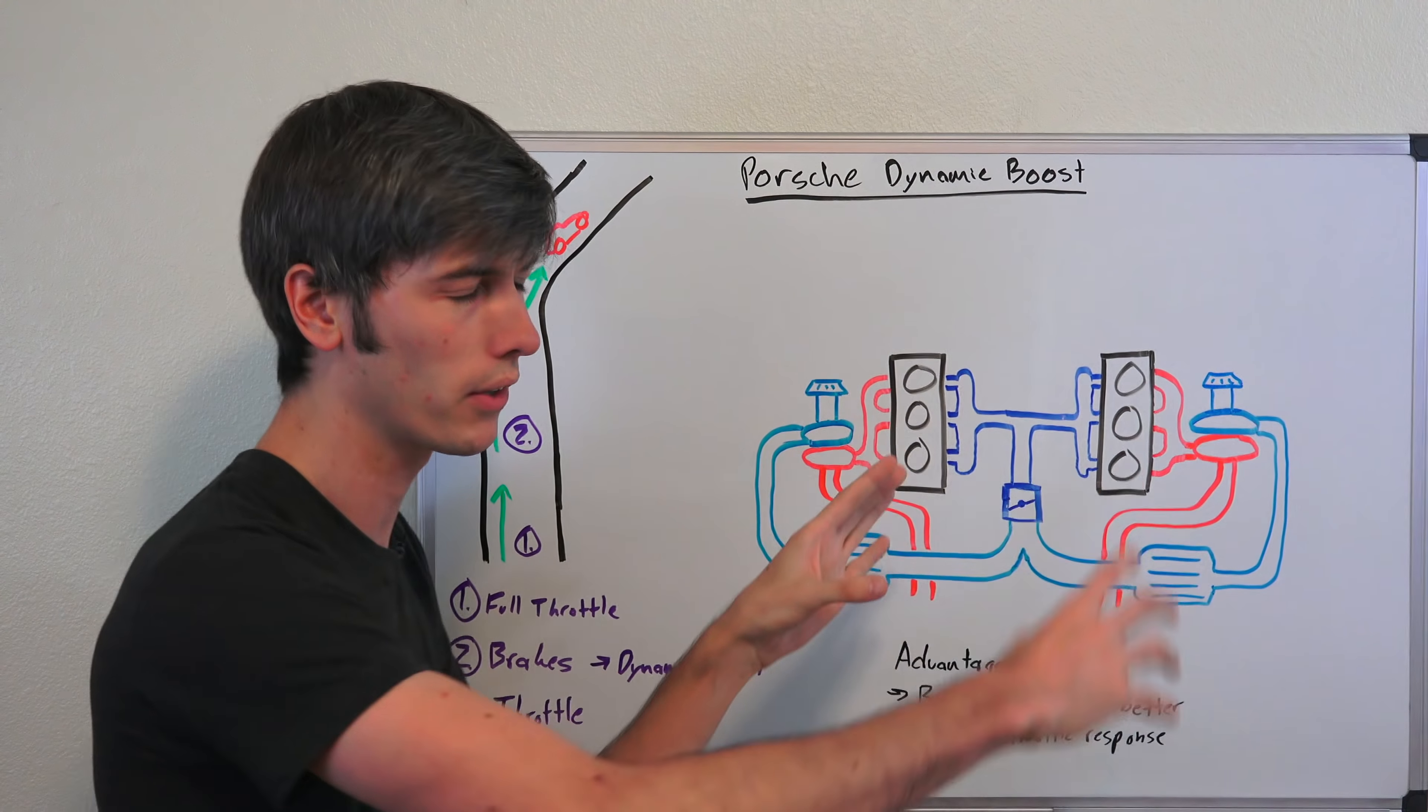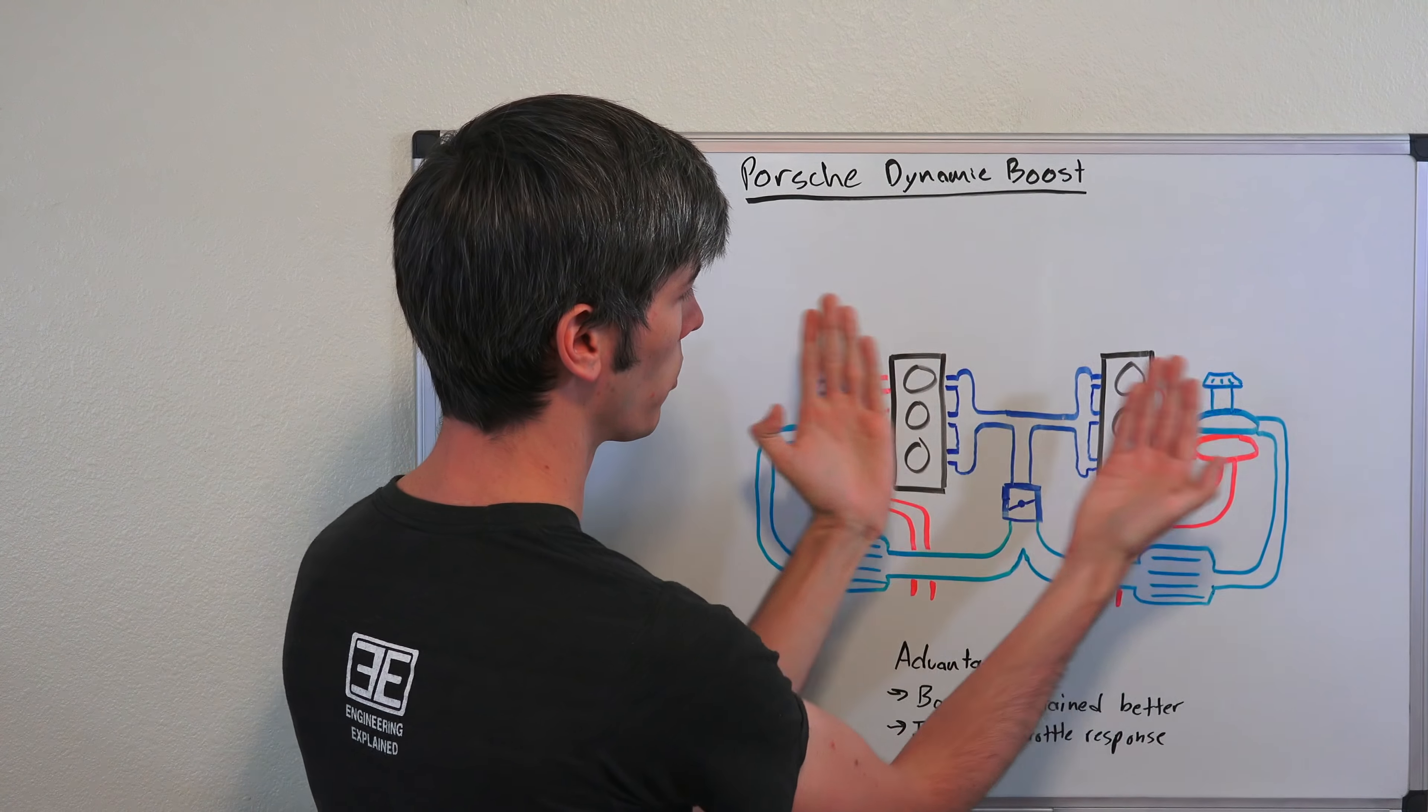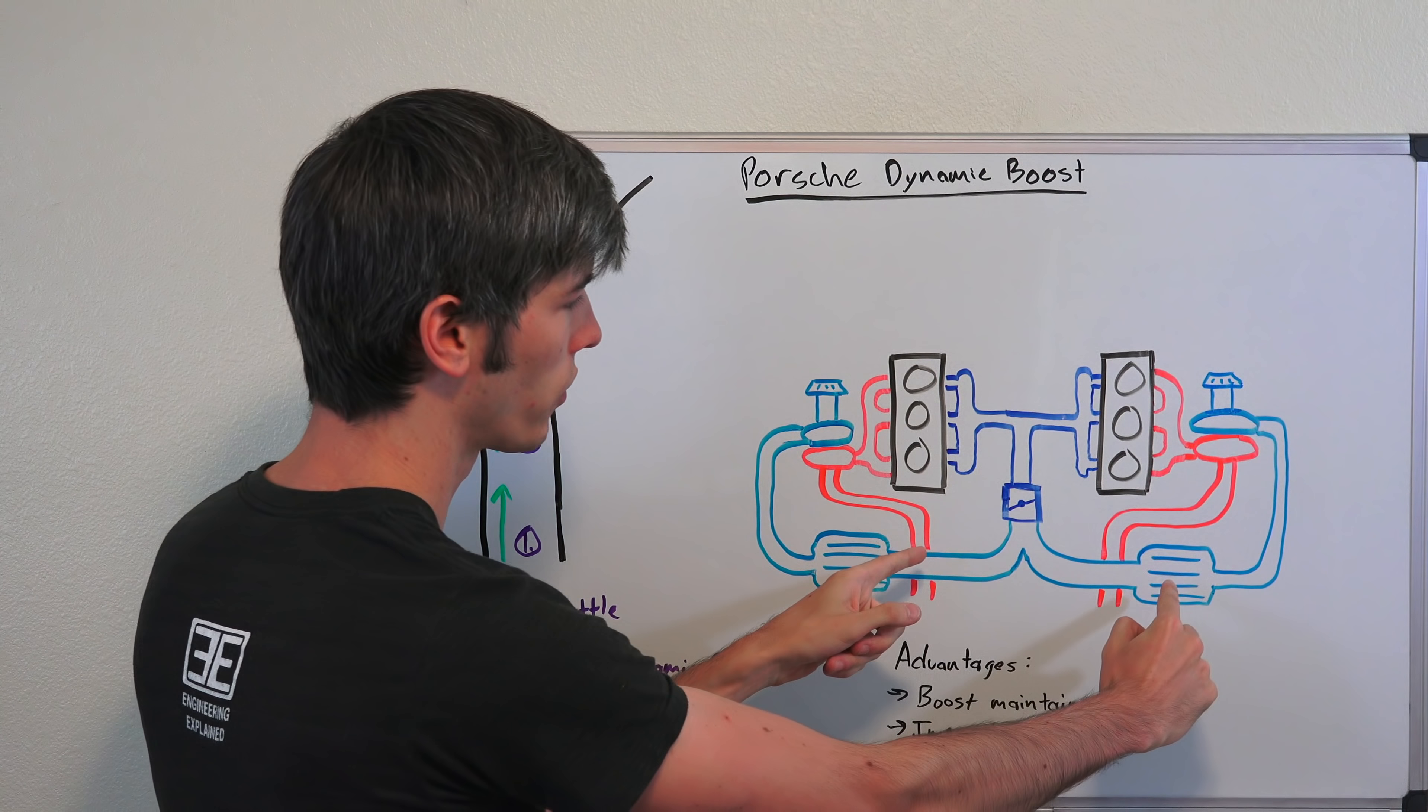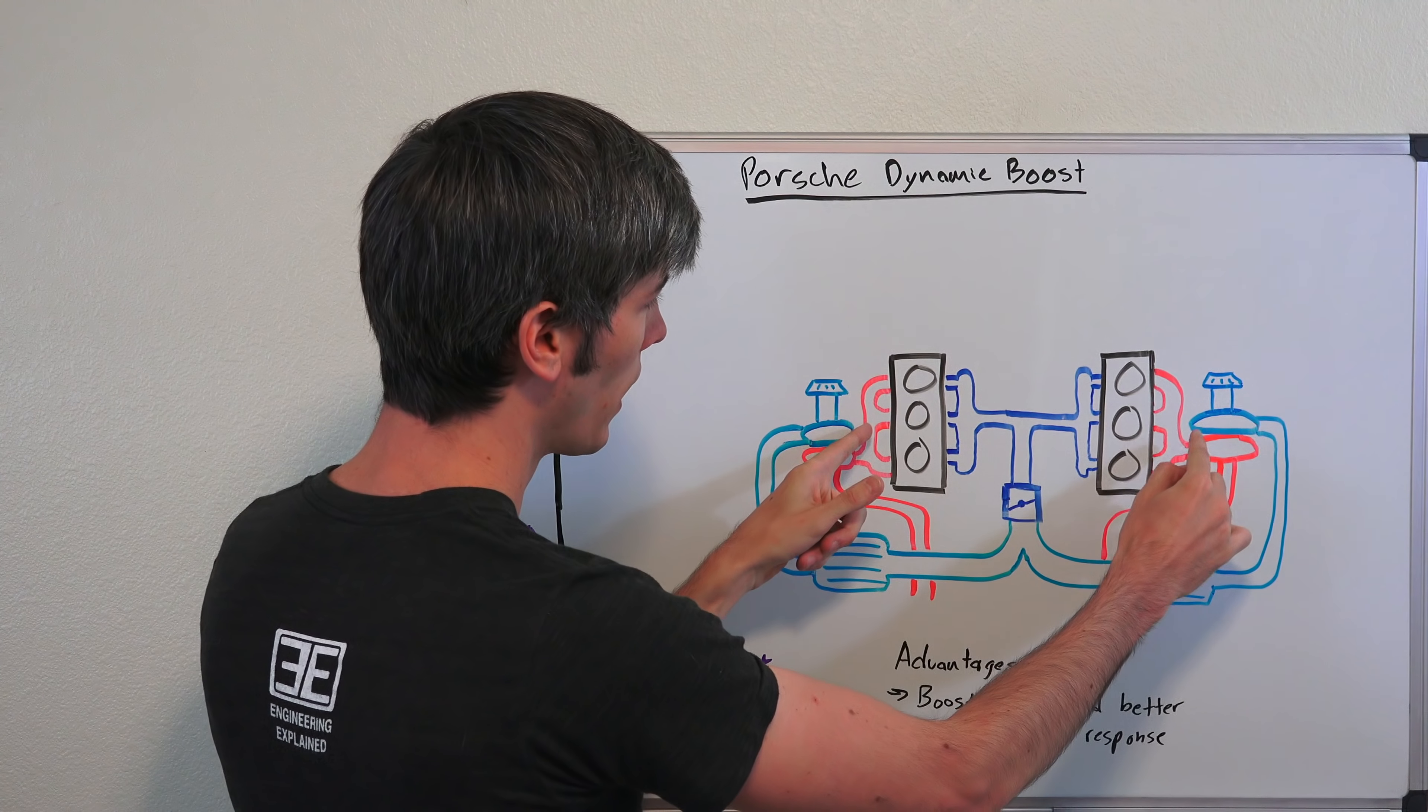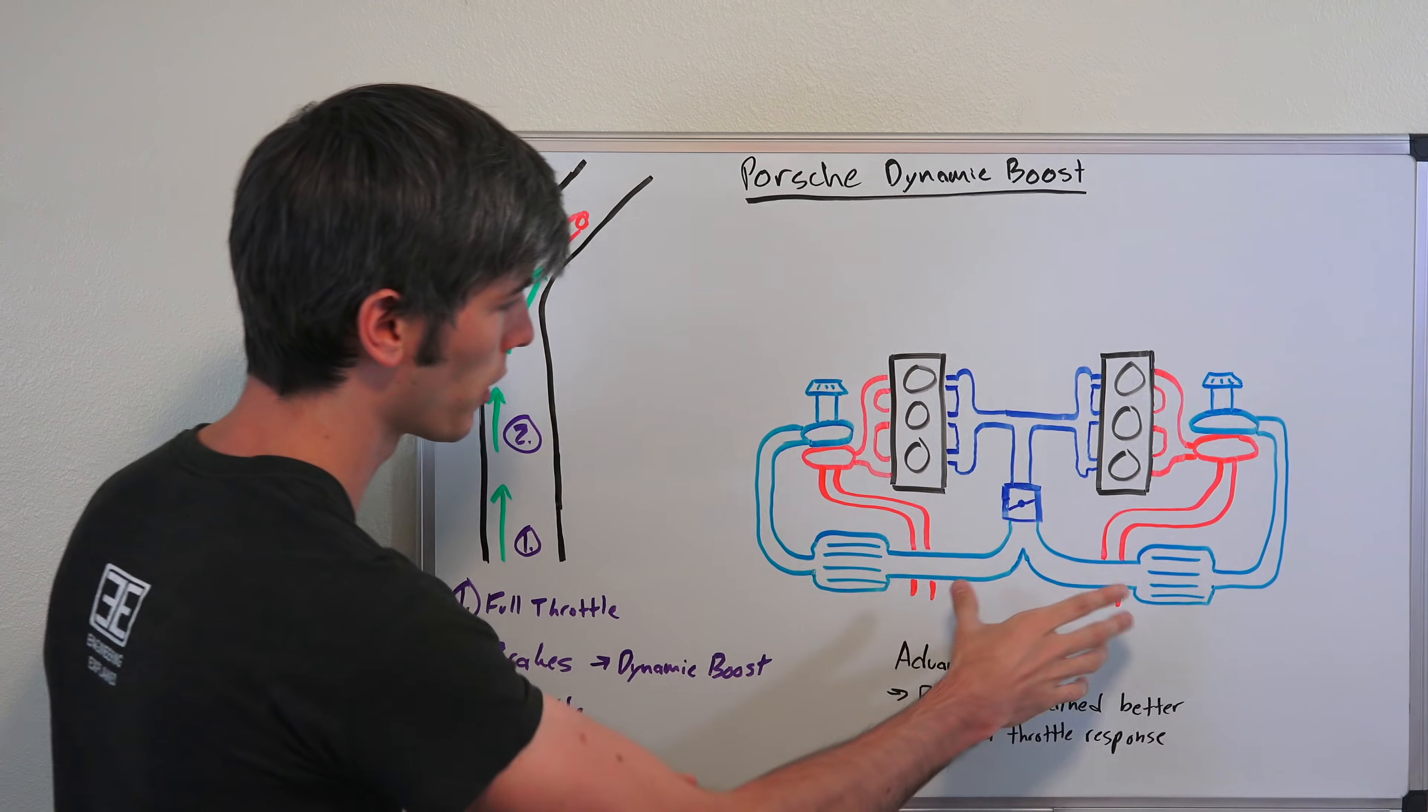Here we have a boxer 6 engine. Of course the cylinders look like they're pointed directly towards you, when in reality they would be laying flat - it was just easier to draw this way. You've got your air coming into your turbocharger compressors, passes through the intercooler, joins up here for a single throttle body, then enters the intake manifold, goes into your cylinders, out the exhaust, spools up the turbine for the turbocharger, and then out the back of the car.